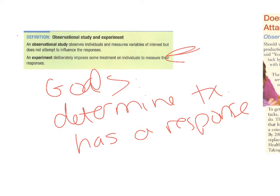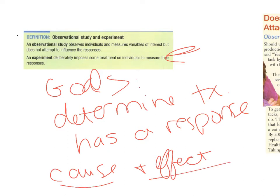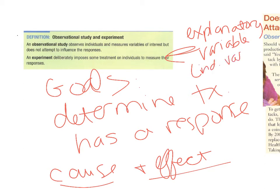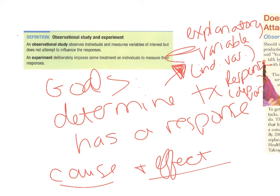An experiment is what you need to do to determine cause and effect. An observational study cannot determine cause and effect — only an experiment can. An experiment contains an explanatory or independent variable — called the explanatory variable in statistics — as well as a response variable, which is the dependent variable. The explanatory variable is the treatment imposed to see if it causes a change, and the response variable is the actual change or response.